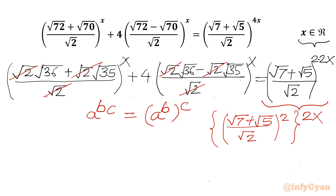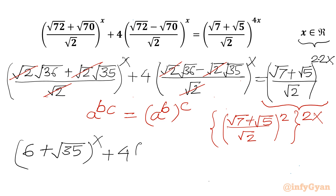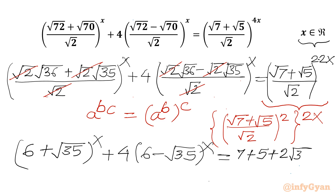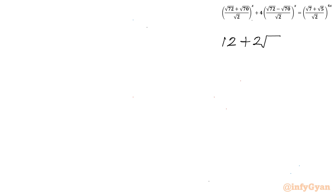On the LHS, √36 is 6, so we have (6 + √35)^x plus 4 times (6 − √35)^x. On the RHS I expand the square: (√7)² = 7, (√5)² = 5, plus 2ab = 2√7·√5 = 2√35. The denominator (√2)² = 2, so RHS becomes (12 + 2√35) / 2, whole power 2x.